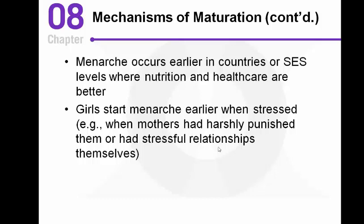Girls are more likely to hit puberty earlier when they are in stressful environments — examples include authoritarian parenting, stressful relationships, or conflict in the home. The thought is that elevated stress hormones like cortisol signal to the body that you need to grow up quickly. Research suggests that when fathers are very loving and appropriately attentive, girls tend to start puberty a little later, but when there's a lot of stress in the home, girls tend to hit puberty a little earlier.